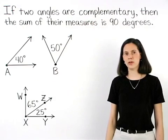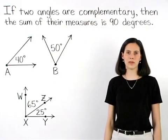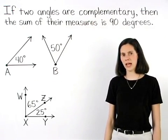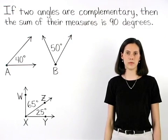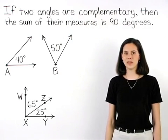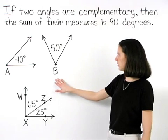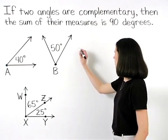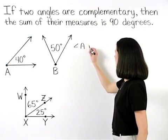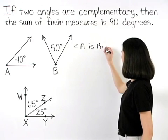And one final note. When two angles are complementary, we say that one angle is the complement of the other. For example, in the first diagram shown, we can say that angle A is the complement of angle B.